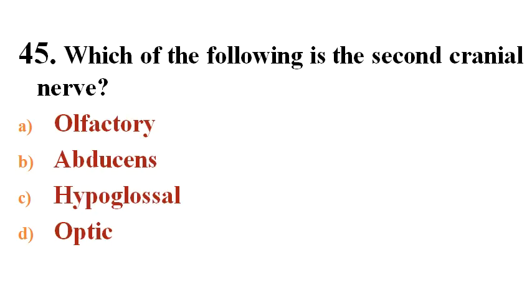Next question: Which of the following is the second cranial nerve? Options A. Olfactory, B. Abducens, C. Hypoglossal, D. Optic.